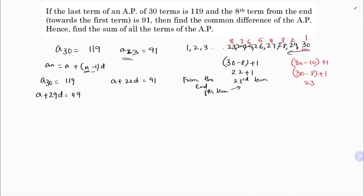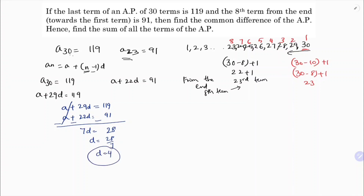Subtracting the two equations: (a + 29d) − (a + 22d) = 119 − 91. That gives 7d = 28, so d equals 28 divided by 7, which means d = 4.